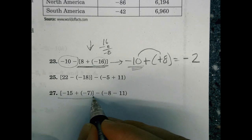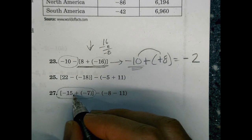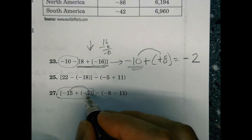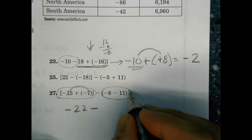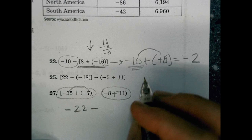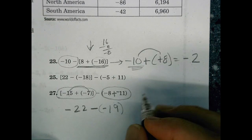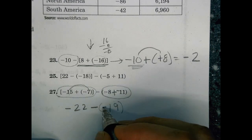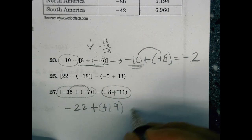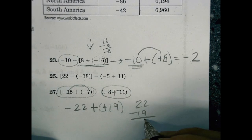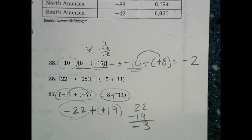Number 27: first work inside the parentheses. Negative and negative — find the sum: 15 plus 7 is 22, keep negative. Then inside the upper parentheses: add a negative, signs are the same, find the sum, keep the sign. Now add the opposite for the remaining subtraction. We find the difference: 22 minus 19 is 3, and the greater absolute value is negative, so negative 3. And that's where we'll stop — the airport is out of control. Have a good day!